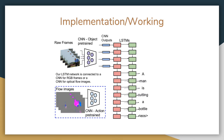Further expanding on the architecture, we can see that raw frames of videos are being fed to the CNN, which outputs features to the LSTMs, which in turn gives us a description of the video. The CNN can be used for RGB frames or optical flow images, and the system has been implemented on both — both give varied results on different datasets.